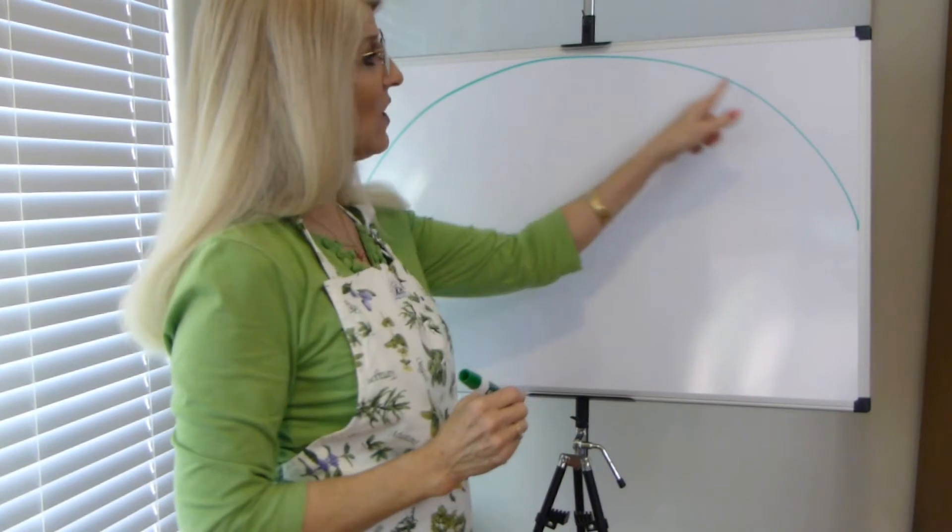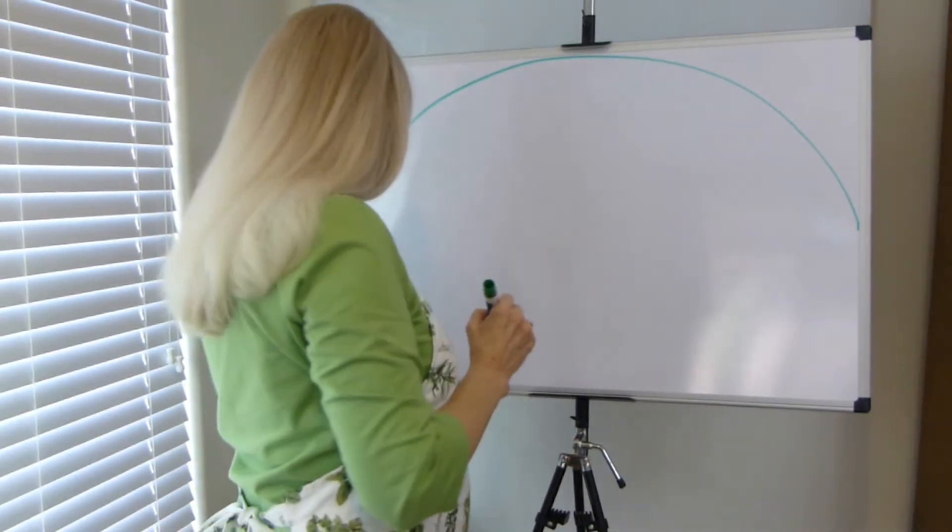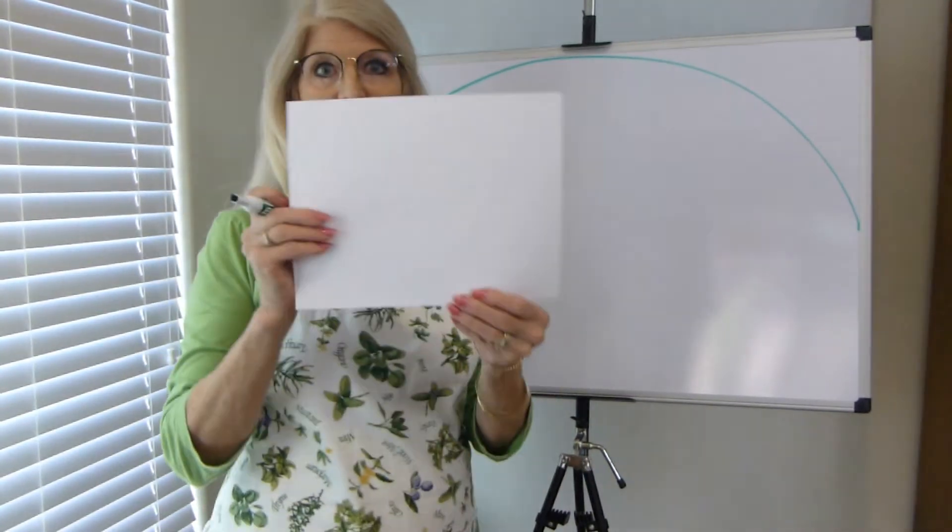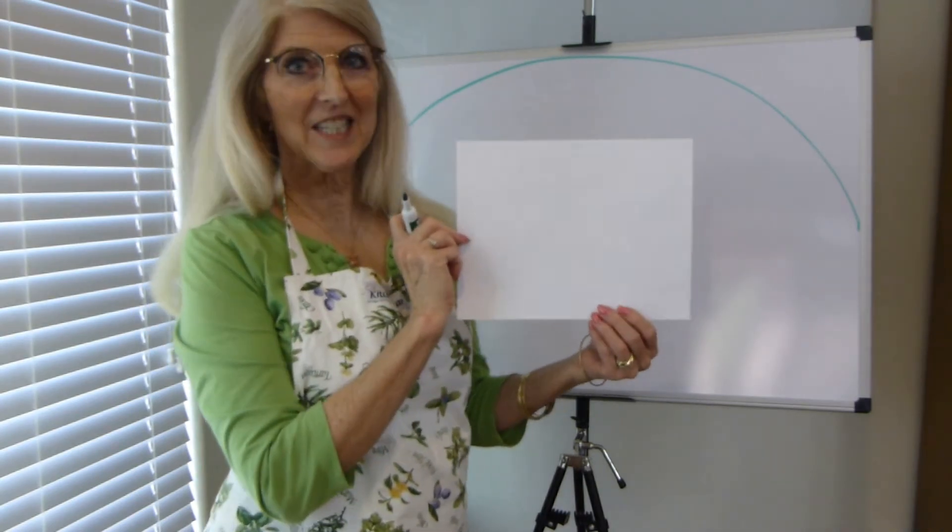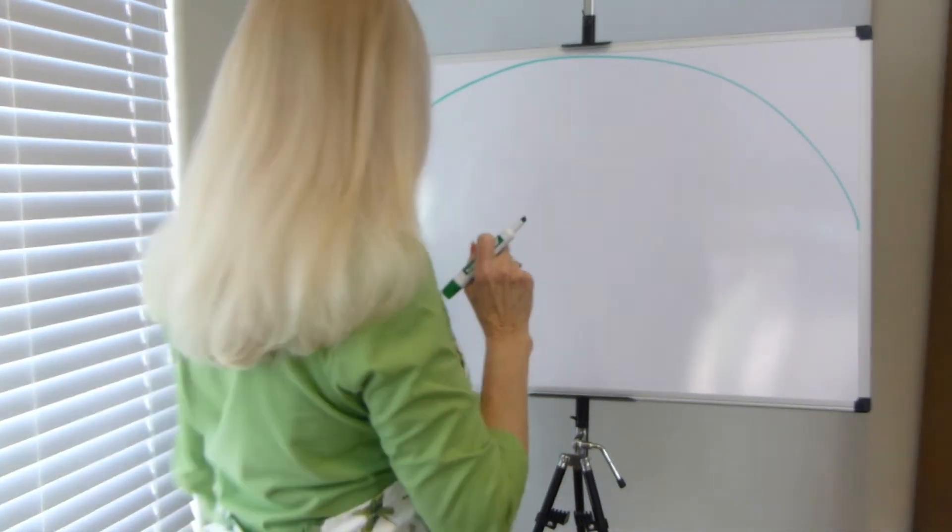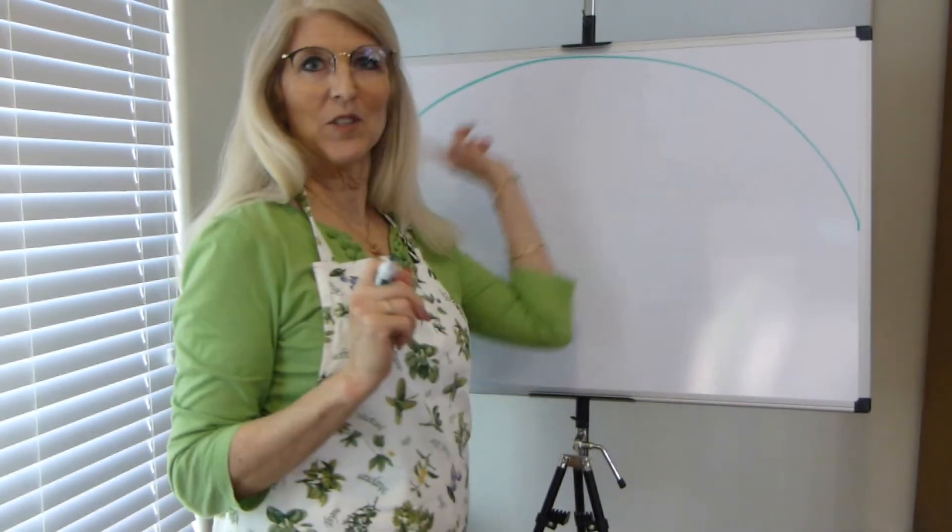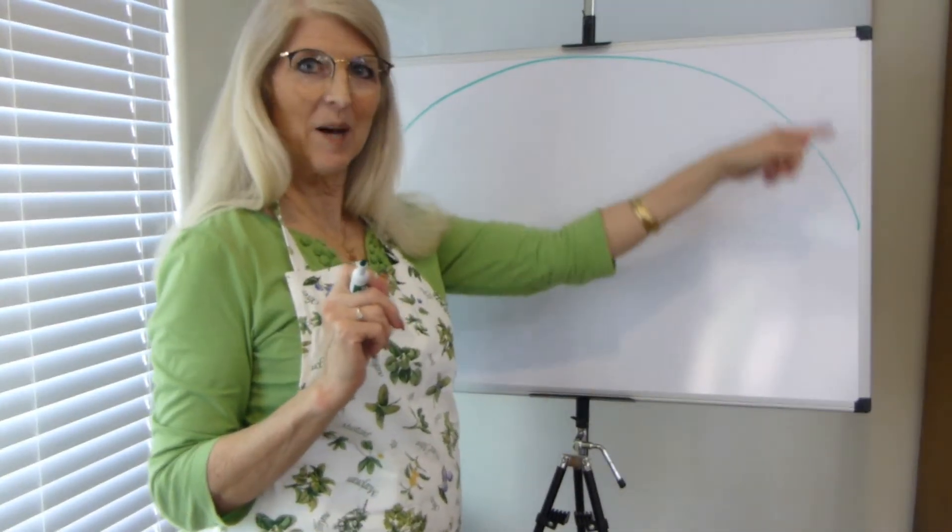This is an arc, a strong arc. Turn your paper to landscape. This is what we call landscape orientation, remember? Let's draw an arc from corner to corner all the way up to the top.